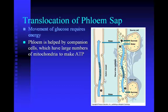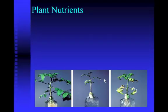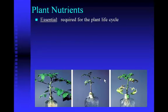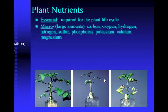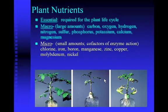Now let's talk about plant nutrients. Essential nutrients are nutrients required for the plant life cycle. You can classify them into macronutrients, which plants need in large amounts — similar to animal macronutrients: carbon, oxygen, nitrogen, sulfur, phosphorus, with the addition of potassium, calcium, and magnesium. Magnesium is needed in large amounts because it is the ion at the center of a chlorophyll molecule.